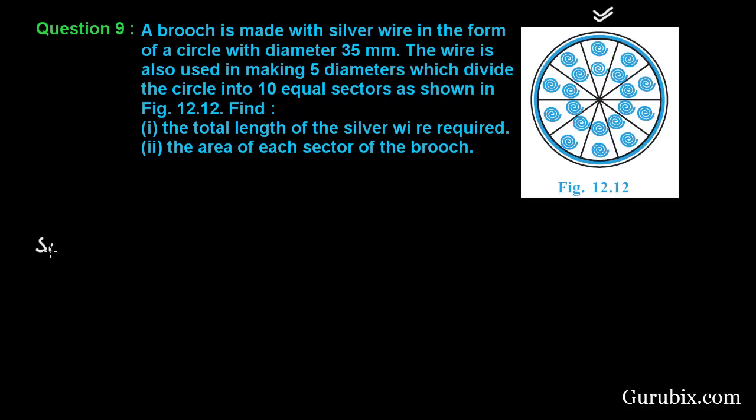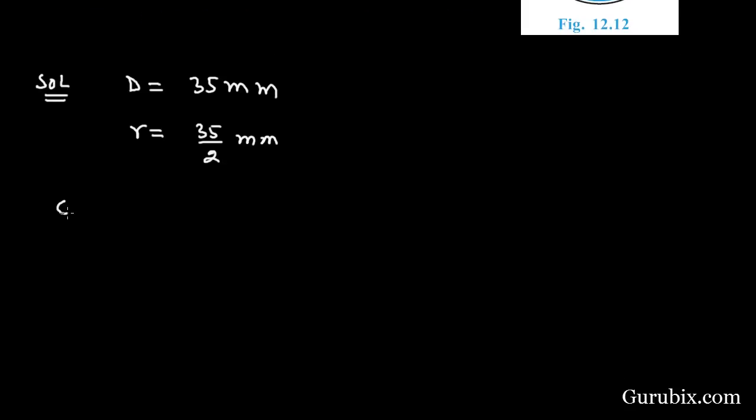It is given that the diameter of the brooch is 35 millimeter, therefore radius of the circle is 35 over 2 millimeter. Therefore circumference of the circle equals 2 pi, pi is 22 over 7, and the radius is 35 over 2 millimeters.